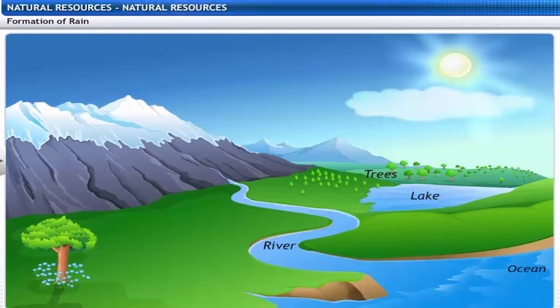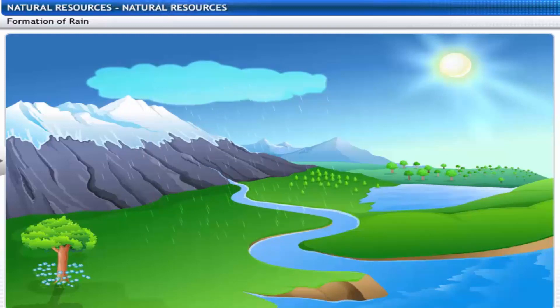Let's see how. Water bodies get heated during the day and water evaporates into the air. Hot air rises and carries the water vapor with it. As the air rises, it cools. This causes the vapor to condense into tiny water droplets. When these droplets grow bigger, they fall down as rain.